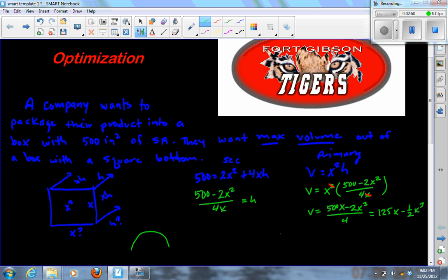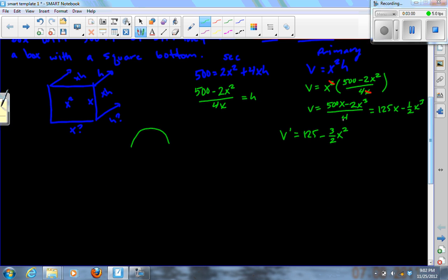My derivative is 125 minus 3/2 x squared. And again, I want to set this derivative equal to zero. So 125 equals 3/2 x squared, or multiply each side by 2/3 and then square root each side. So plus or minus the square root of 250 over 3 is what x is.